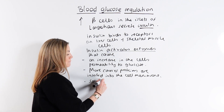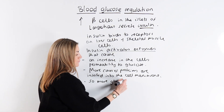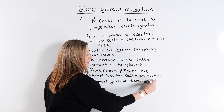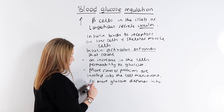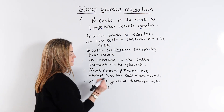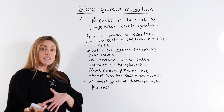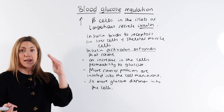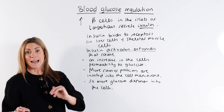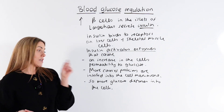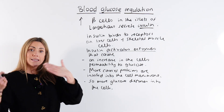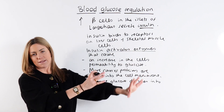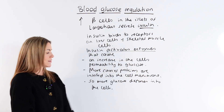When insulin binds to the receptors, it activates enzymes. These enzymes cause vesicles that contain carrier proteins to move towards and fuse with the cell membrane. You should know that there's an increase in carrier proteins, which increases the cell's permeability to glucose, so more glucose diffuses into the cells. This is removing glucose from the blood, helping to bring your blood glucose level back down to normal.